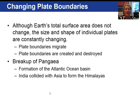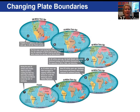The plate boundaries are constantly changing. Keep in mind that the Earth's total surface area remains unchanged, however the size and shape of individual lithospheric plates do change. Plate boundaries migrate, they are created, and they are destroyed. 200 million years ago began the breakup of the supercontinent Pangaea. As a result, the Atlantic Ocean Basin formed, and India collided with Asia to form the Himalayas. Let's take a look at these changing plate boundaries over the last 200 million years.